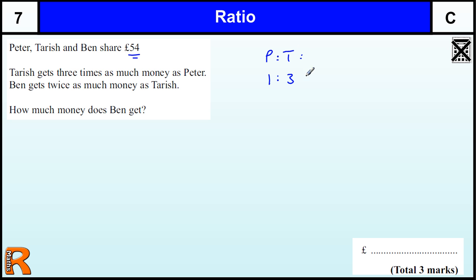Ben gets twice as much as Tarish, so whatever Tarish gets, Ben gets twice as much, so he'll have six. So we have the ratio one, three, six, so that means that Ben's getting six times as much as Peter.